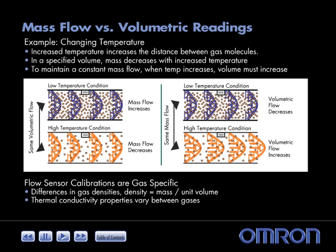Density is defined as mass per unit volume. Because different gases have different densities and thermal conductivity properties, it is important to pay attention to the calibration gas specified on the datasheet when sizing OMRON flow sensors. Contact OMRON for assistance in choosing an appropriate flow sensor for a gas other than that specified.